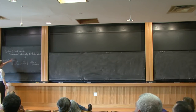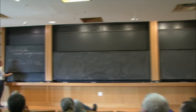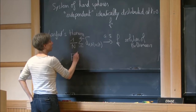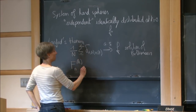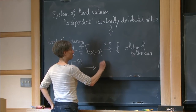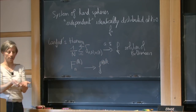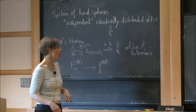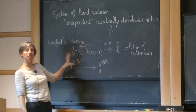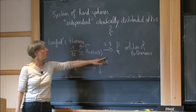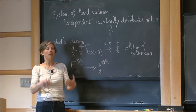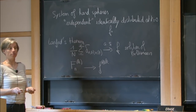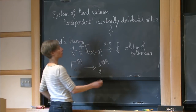The marginal of order k in the phase space of dimension 2d will converge to f^k. So if you look at k typical particles in your system and consider the joint distribution of these k particles, it converges to this product — meaning the particles essentially stay independent. This is what is called the propagation of chaos.